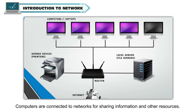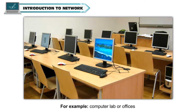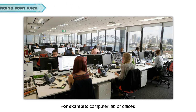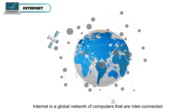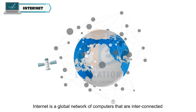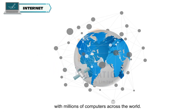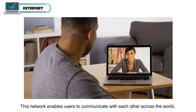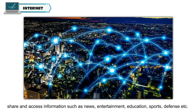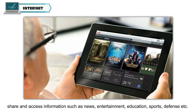Computers are connected to networks for sharing information and other resources, for example in a computer lab or offices. Internet is a global network of computers that are interconnected with millions of computers across the world. This network enables users to communicate with each other across the world and share and access information such as news and entertainment.